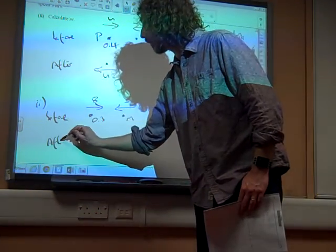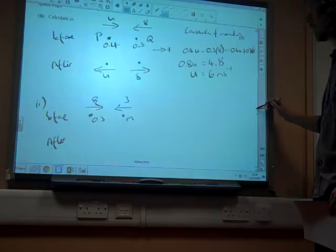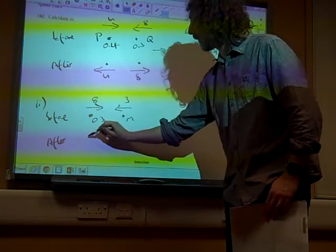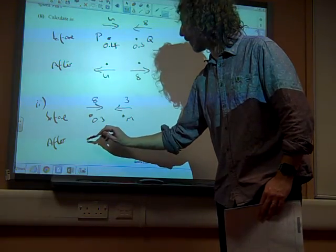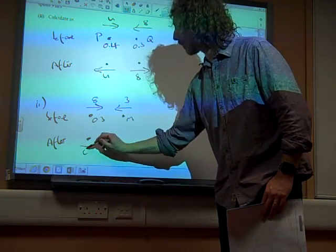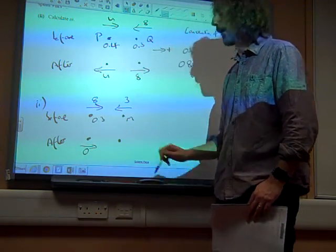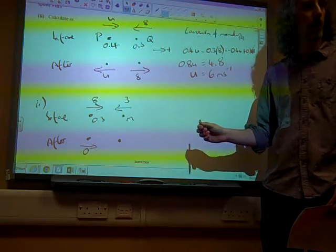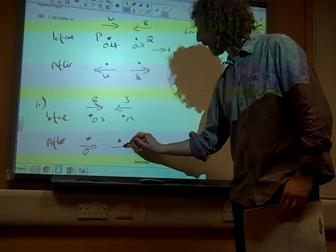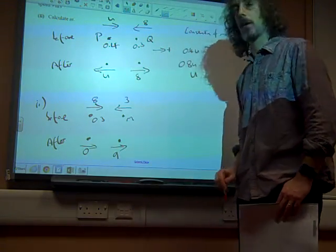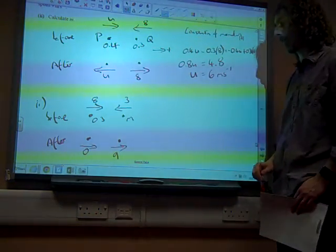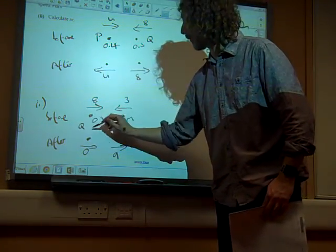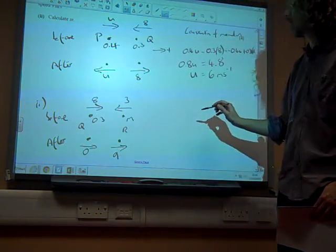And then we've got after. The question says Q is at rest, and R has speed 9. Q is at rest. And R has speed 9. Now, if Q is at rest, then R must have rebounded. So R has speed 9 in that direction. Otherwise, it would have had to have left over Q. So that's Q and that's R this time.